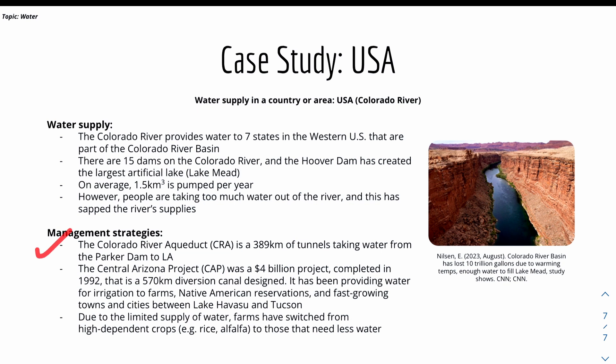The management strategies include the Colorado River Aqueduct, or CRA, which is a 289 km tunnel taking water from the Parker Dam to Los Angeles. The Central Arizona Project, or CAP, was a $4 billion project completed in 1992 containing a diversion canal, providing water for irrigation to farms, Native Americans, and fast-growing towns and cities. Due to limited water supply, farmers have also switched from high water-dependent crops like rice and alfalfa to crops that need less water to grow.